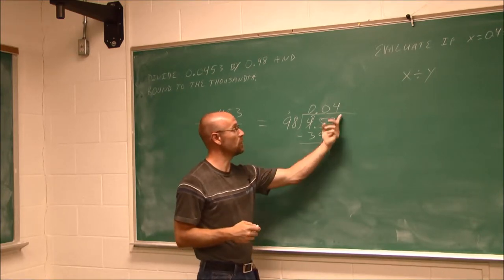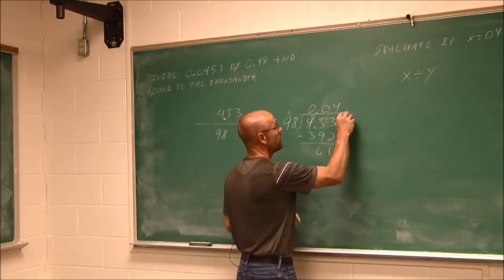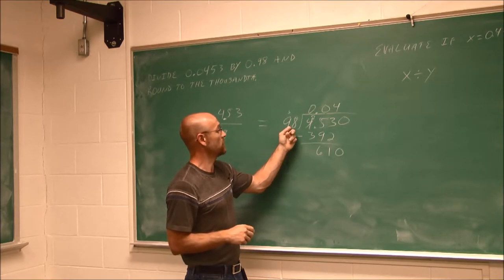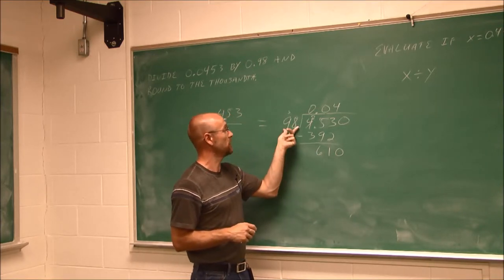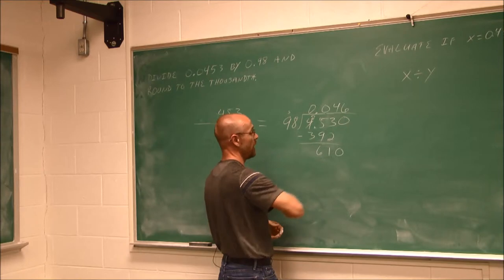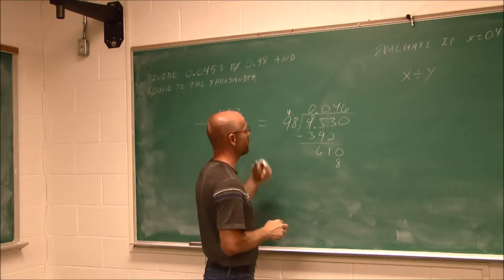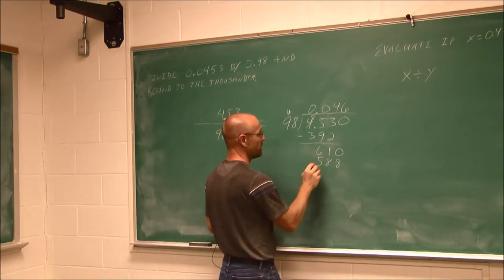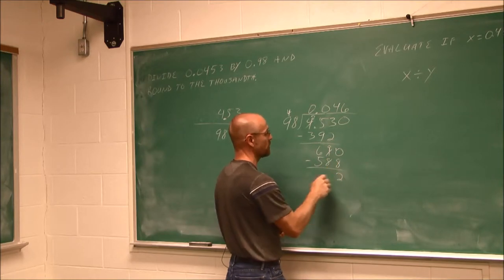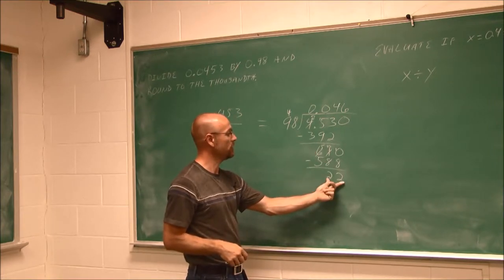But now there's no more values to bring down. But I know this isn't the end of the division because I still have a remainder. We're not going to use remainders here. We're going to actually continue the division. So I'm going to add a 0 and bring it down. How many times does 98 go into 610? Well, if I use my estimate, this is pretty close to 100, it's going to go into this 6 times. 6 times 8 is 48, carry the 4. 6 times 9 is 54, and 4 is 58. And now we can find that difference. 0 minus 8, we've got to borrow here. 10 minus 8 is 2. I've got to borrow here. 10 minus 8 is 2. 5 minus 5 is 0. So I have 22.